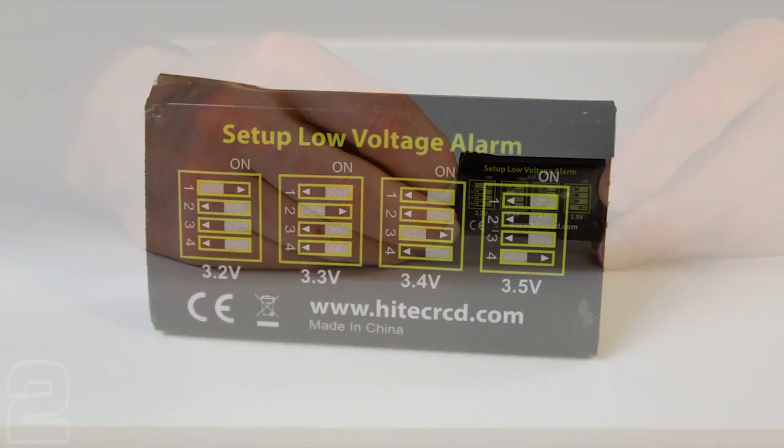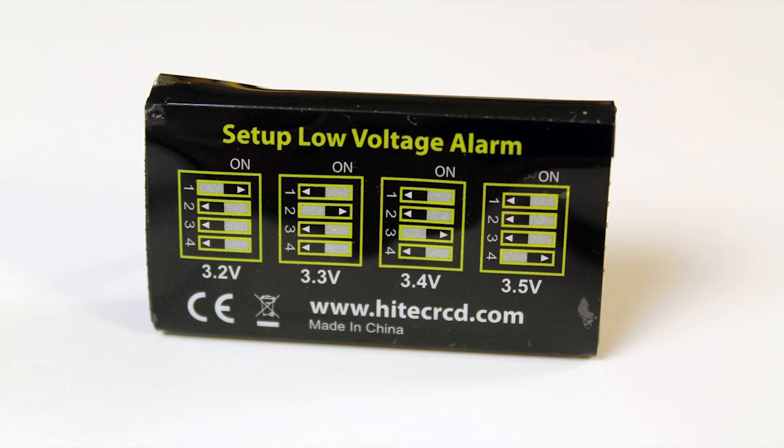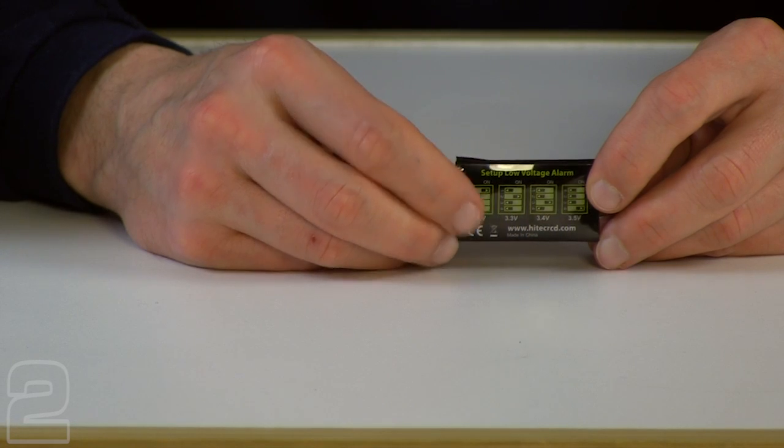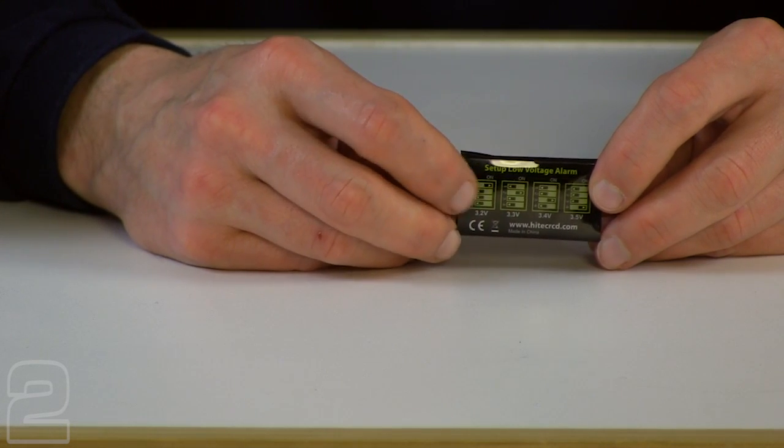If you flip the unit over they have a small index there and simply all you do is turn on the one that you want. So if you want 3.2 volts you kick that on and turn all the others off and vice versa as you go across the list.